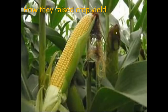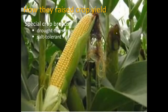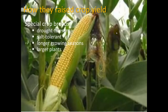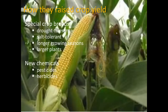So how did the Green Revolution achieve this remarkable increase in food production? They used special crop breeds — ones that are drought tolerant, requiring less water; salt tolerant, able to grow in soil that has experienced salinization; and crops that have longer growing seasons so they can grow bigger. We've also developed enlarged plants — for example, traditional breeding techniques created corn with large ears. New chemicals were developed to increase crop yield: pesticides, which kill insects, and herbicides, which kill weeds that would rob nutrients.